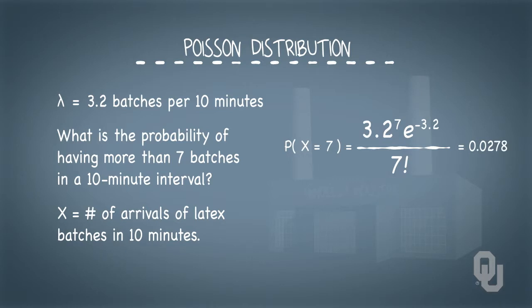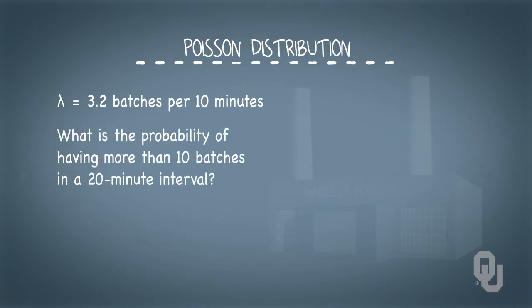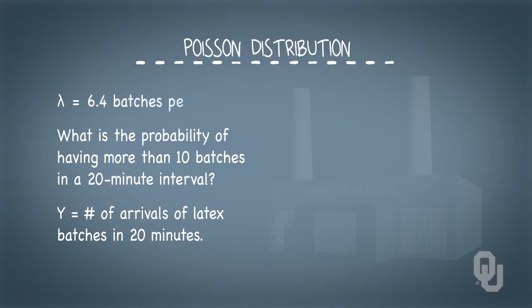What is the probability of exactly 10 batches arriving during a 20 minute interval? Let's define random variable y as the number of latex batches arriving during a 20 minute interval, and the rate of occurrence would then be 6.4 batches per 20 minutes.